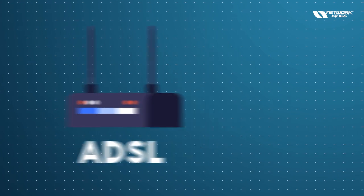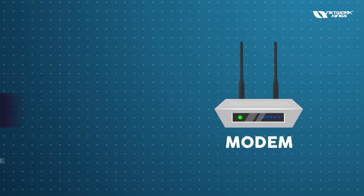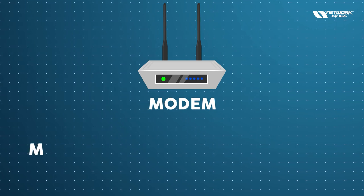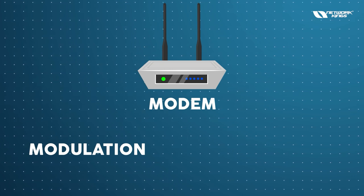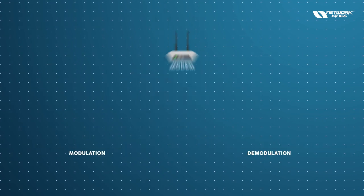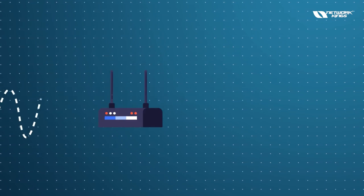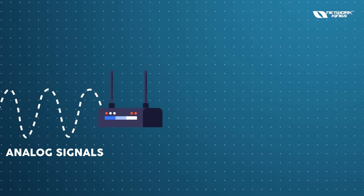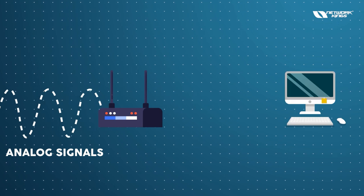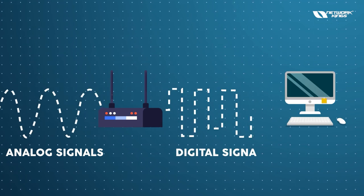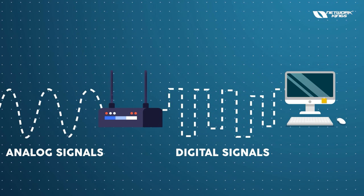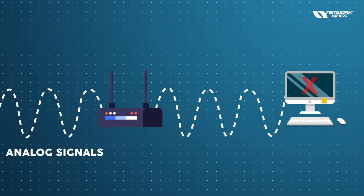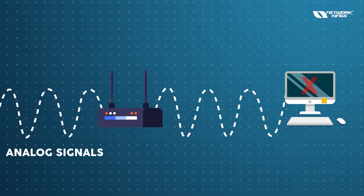The ADSL device has the functionality of a modem. A modem performs modulation and demodulation. When signals arrive at your device, they come in the form of analog signals. Your computer, however, understands only digital signals.